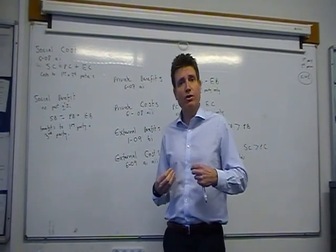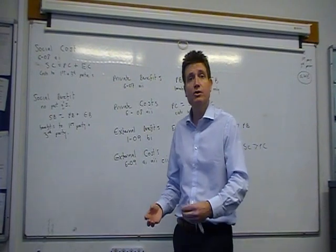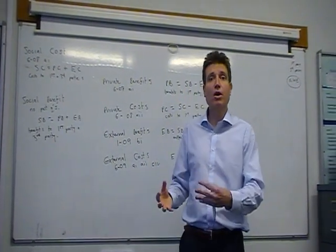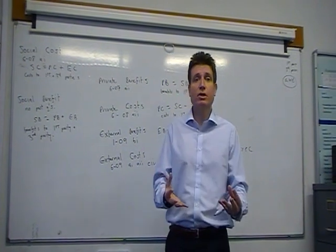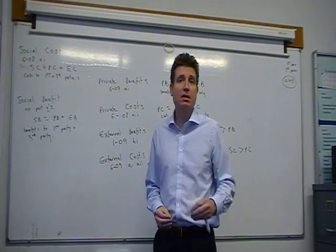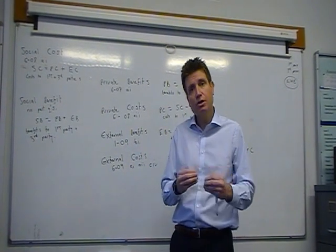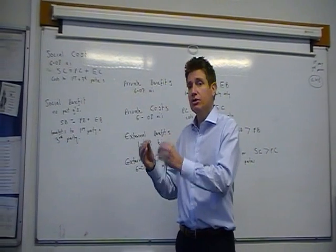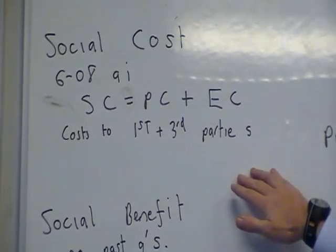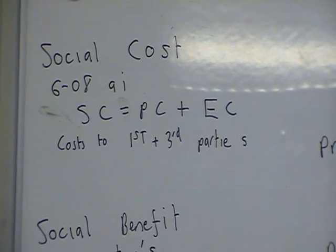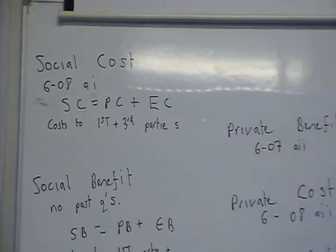Alcohol consumption. Private costs have to purchase the alcohol. There may be external costs. For instance, if I got drunk, I might need medical care. And, therefore, there's external costs of me taking a bed in a hospital and things like that. So, it's the total cost. Remember that. The private cost plus the external cost is the social cost. Or, the cost of the first and third parties. Remember, first party is the individual. Third parties are people outside the decision-making process.